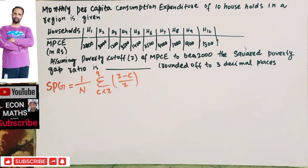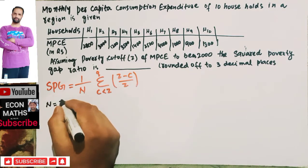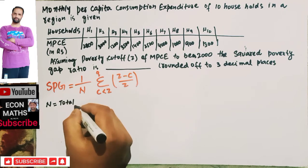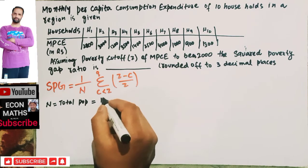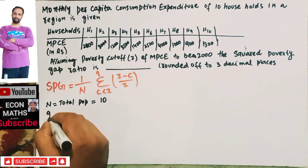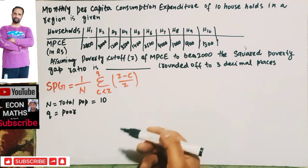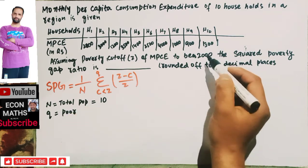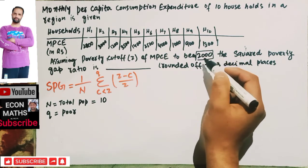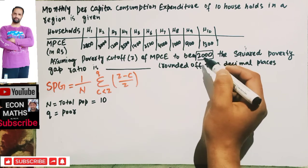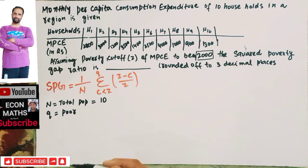Here, n denotes the total population. In this case, n equals 10, since we have 10 individuals. q denotes the number of poor. The number of poor are those people whose income — or more precisely, whose monthly per capita consumption expenditure — is less than 2000.